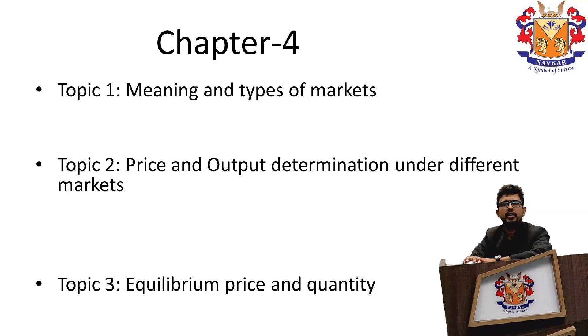The first is meaning and types of markets. The second is price and output determination under different markets, and third is equilibrium price and quantity.